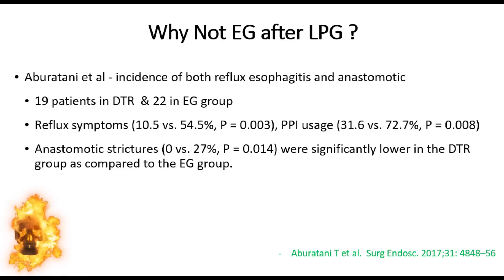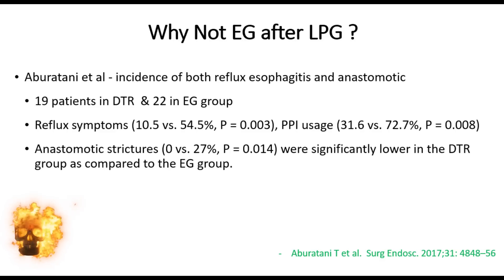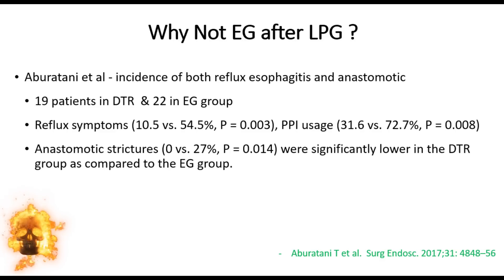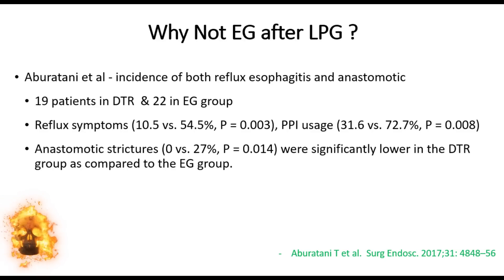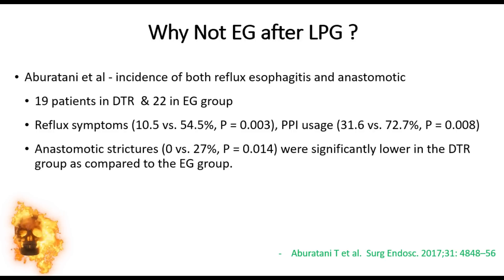The study also reported that anastomotic strictures were higher — 0% versus 27% — in the esophagogastrostomy group. They therefore recommended that after proximal gastrectomy, double tract reconstruction is the preferred method compared to esophagogastrostomy, especially in younger patients who have a long life ahead and a higher chance of reflux, Barrett's esophagus, and anastomotic stricture.